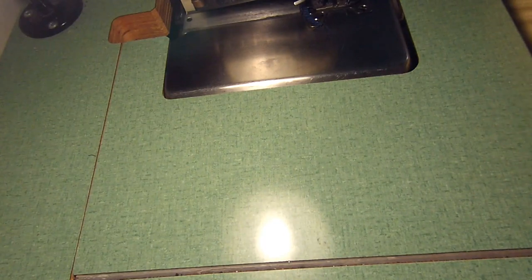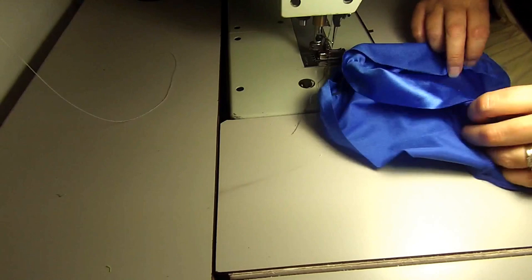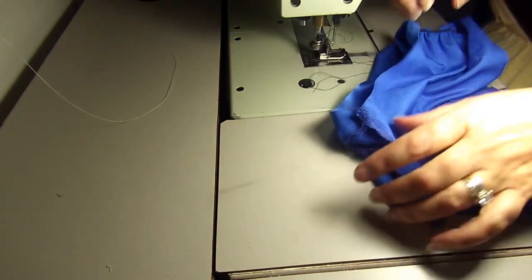Now we're going to go to the zigzag machine or the cover stitch machine. We're just going to hem the leg pieces, the bottom part of the shorts, and the top.